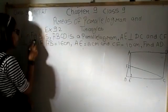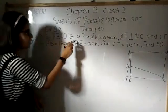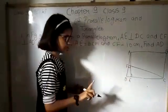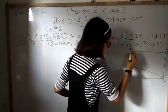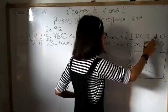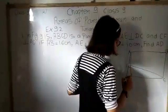Question number first is in figure 09.15. ABCD is a parallelogram where AE is perpendicular to DC and CF perpendicular to AD.